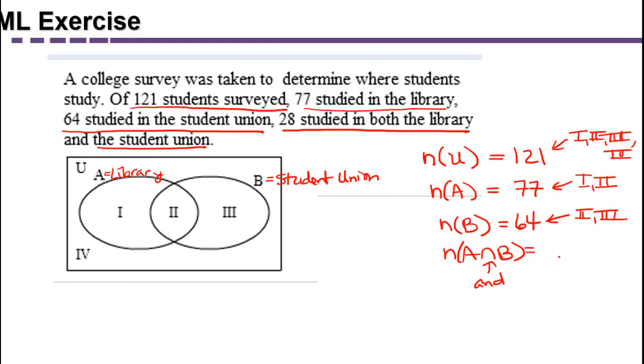So those that studied in both the library and the student union is referring to 28 students in region 2, just the overlap between the two.